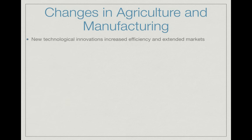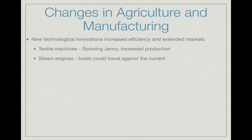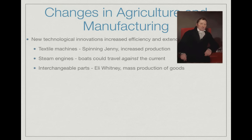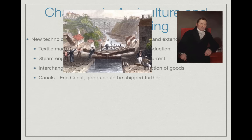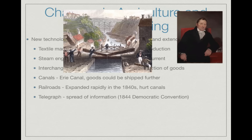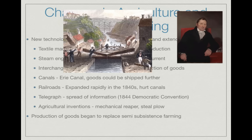New technological innovations increased efficiency and extended markets — this is the Market Revolution. Textile machines like the spinning jenny increased production. Steam engines allowed boats to travel against the current, improving transportation. Interchangeable parts, invented by Eli Whitney, allowed for mass production of goods. Whitney also invented the cotton gin. The Erie Canal connected places as far away as Chicago to New York City. Railroads expanded greatly in the 1840s, hurting canals. The telegraph helped spread information — one of the first things transmitted was the nomination of James K. Polk at the 1844 Democratic convention.